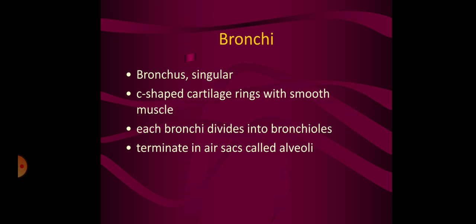Then we have the next structure, the bronchus, which is singular, and bronchi, which is plural. There are two bronchi. These bronchi contain C-shaped cartilage rings with smooth muscles. Each bronchus divides into bronchioles, which in turn terminate into air sacs called alveoli.